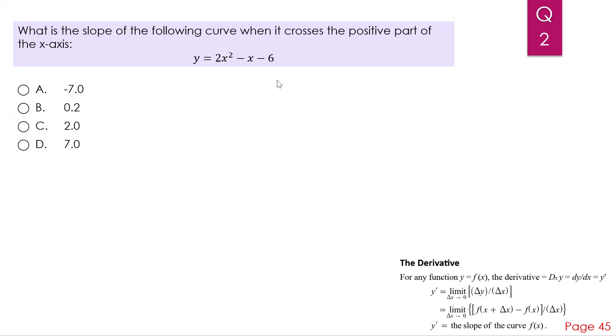The next question, what is the slope of the following curve when it crosses the positive part of the x-axis? Okay, so we need to find the slope. And the slope, basically it's y prime of the function at a certain point. So that point is when it crosses the positive part of the x-axis.